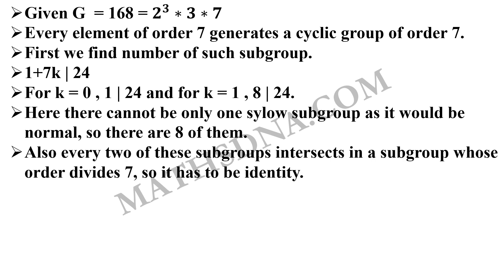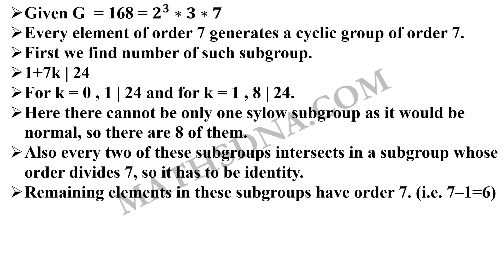Also, every two of the subgroups intersect in subgroups, intersect a subgroup whose order divides 7. So that element has to be identity. Identity is common in all the subgroups. Thus, total number of remaining elements in each of the subgroups will be 7 - 1. That is identity will be removed. So it will be 6.